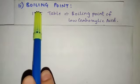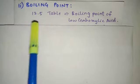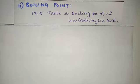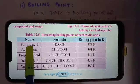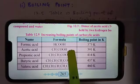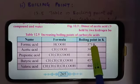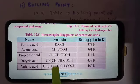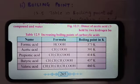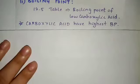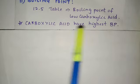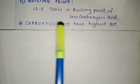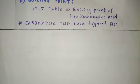Next, we will discuss the boiling point of carboxylic acid, for which you have to refer to table 12.5. Formic acid, the very first carboxylic acid, has a boiling point of 373 Kelvin. As the number of carbon atoms increases, the boiling point is also increasing. One important note: carboxylic acids have the highest boiling point — much higher than other compounds studied so far. There is also table 12.6 for variation of boiling point with functional group.